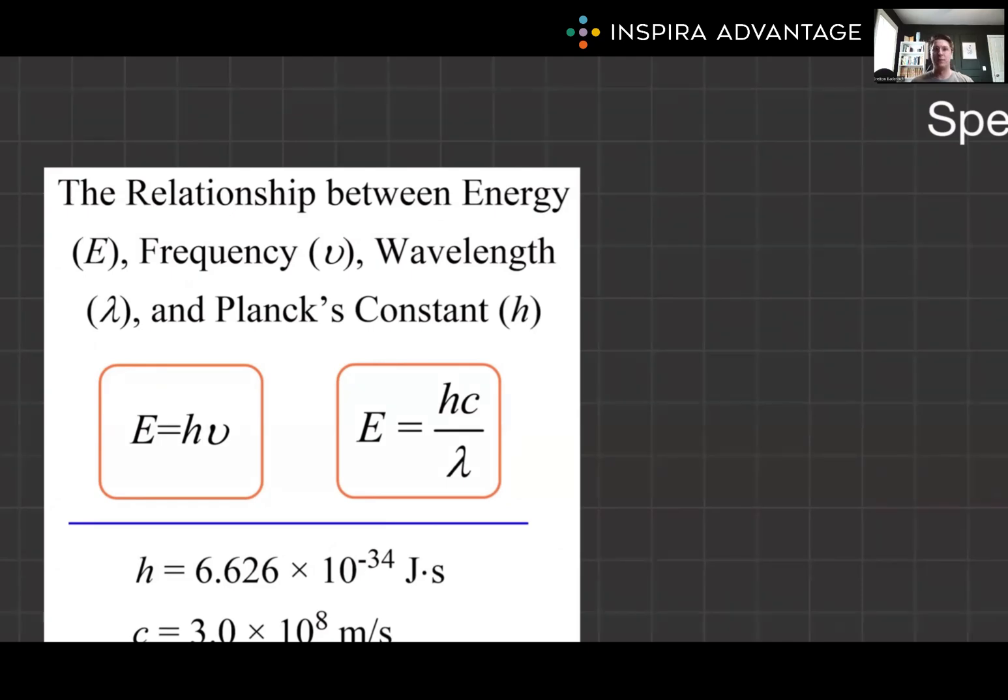Let's begin with the nature of light. Spectroscopy hinges on understanding light itself, a form of electromagnetic radiation that exhibits both wave-like and particle-like properties. Light's dual nature is central to spectroscopy. As waves, light is characterized by its wavelength lambda and frequency ν, which are inversely related through the speed of light: c equals lambda ν.